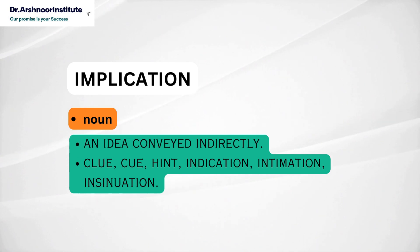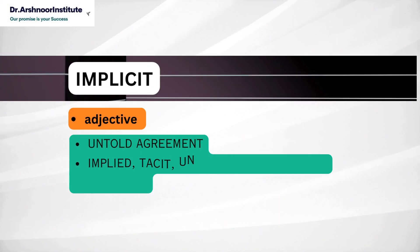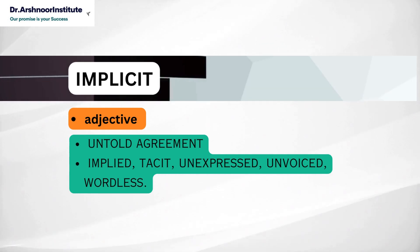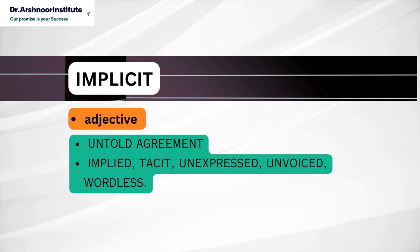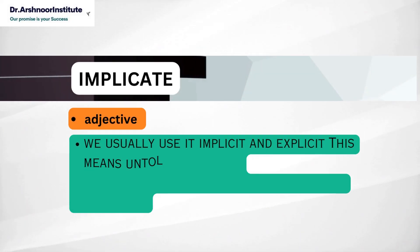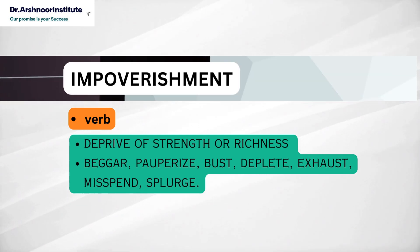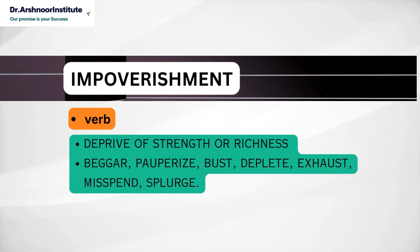Our next word is implicit. We usually use it implicit and explicit. This means untold agreement. It's an adjective and it means implied, tacit, unexpressed, unvoiced, wordless. Next word is impoverishment. It's a verb and it means deprive of strength or richness and its synonyms are beggar, pauperize, bust, deplete, exhaust, misspend, splurge.